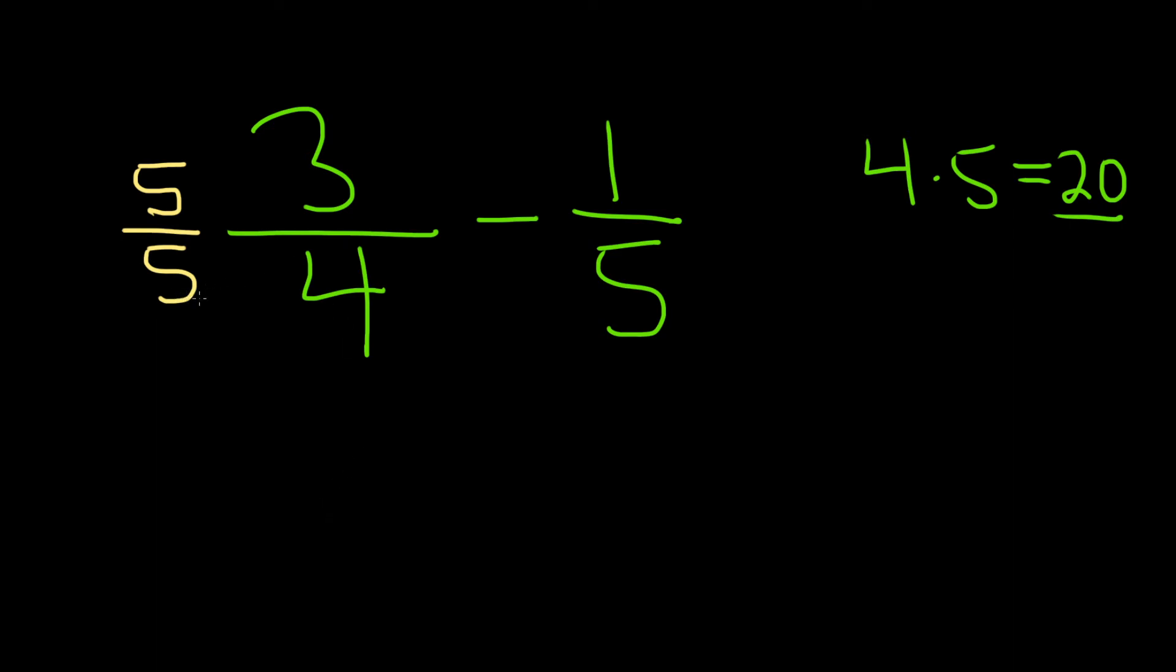You see, because now when you multiply, 5 times 4 is 20. Then you do the same thing over here. What are you missing to get a 20? Well, you're missing a 4. So 4 over 4.